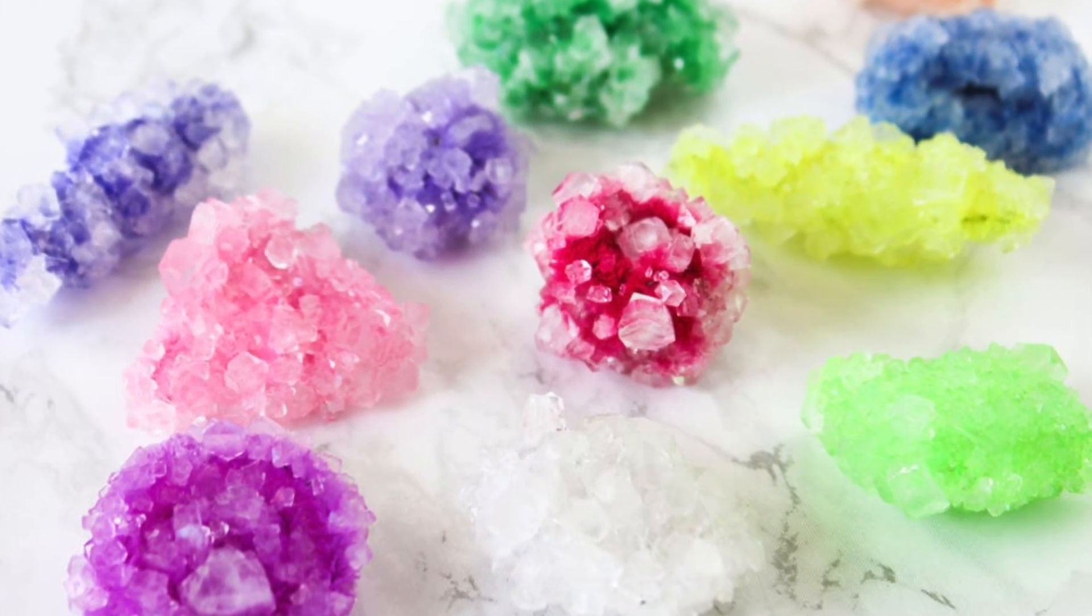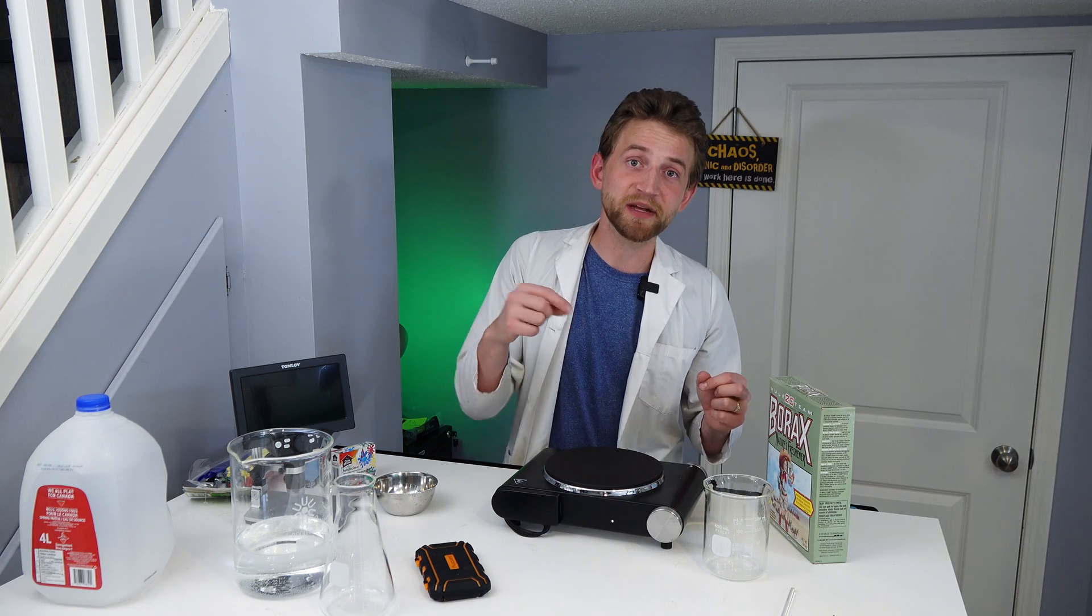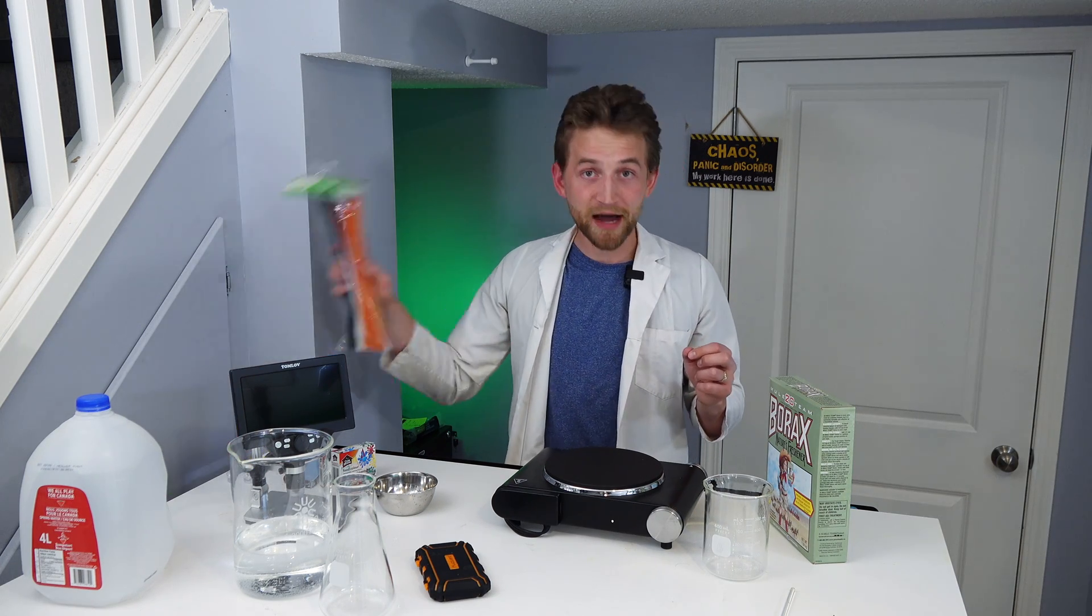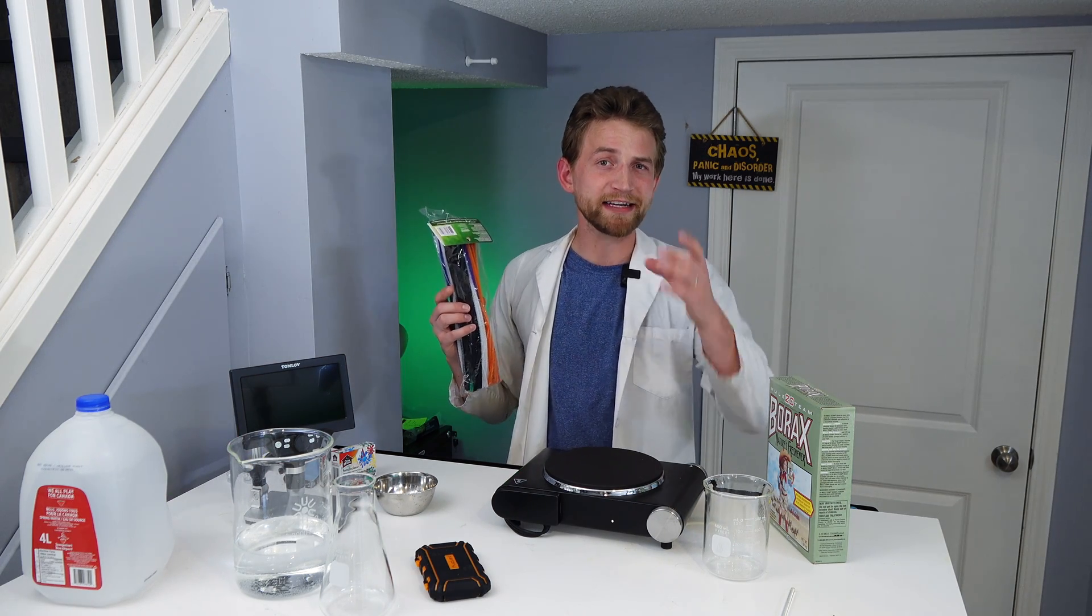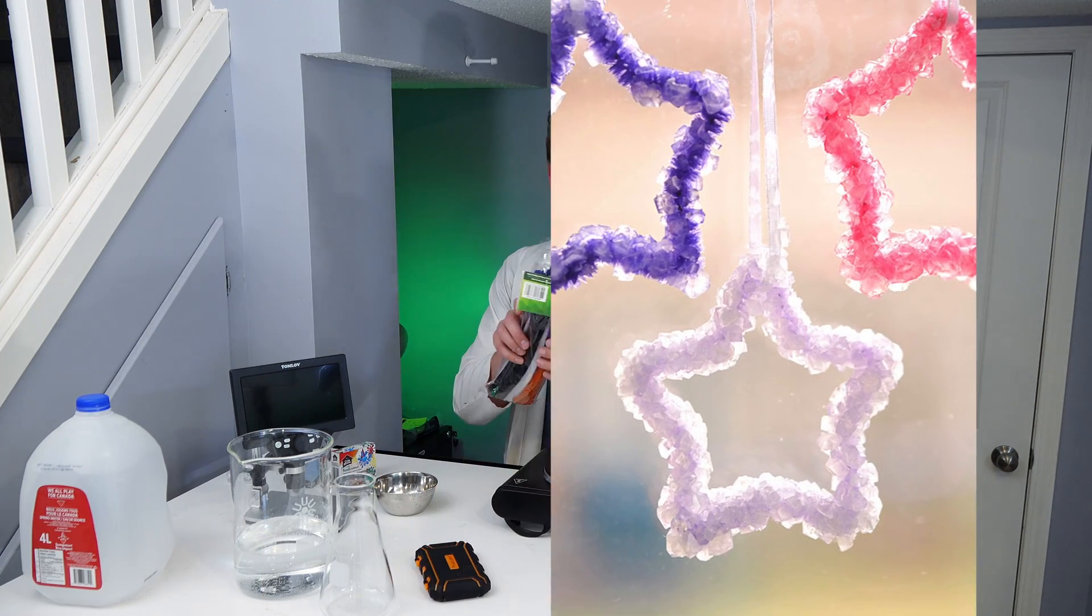So the quick and easy method of making borax crystals, you need three quarters of a cup of borax for every 500 milliliters of water. You heat it up on a stove, you pour in the borax, make sure it's all mixed together and then you hang a pipe cleaner in whatever shape you want inside of the borax and then after a couple of hours or overnight you pull it out and you have a beautiful crystal formation on the pipe cleaner.